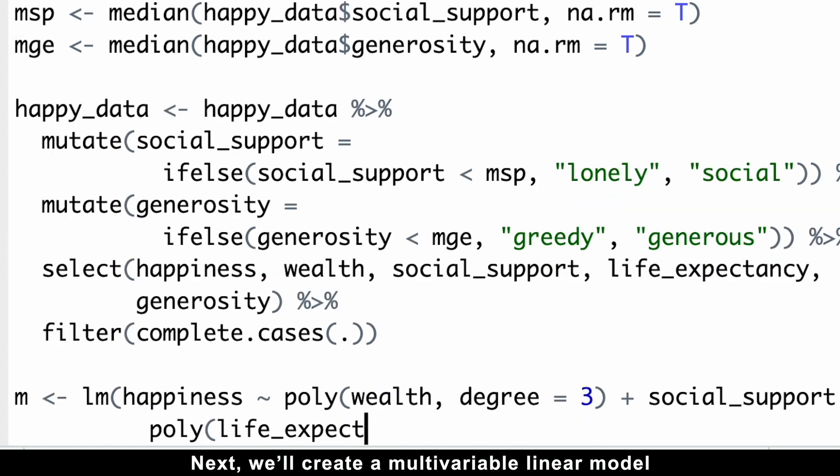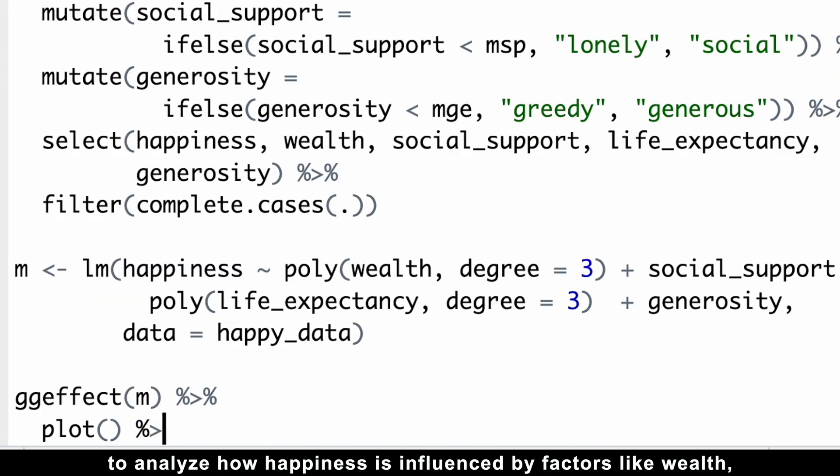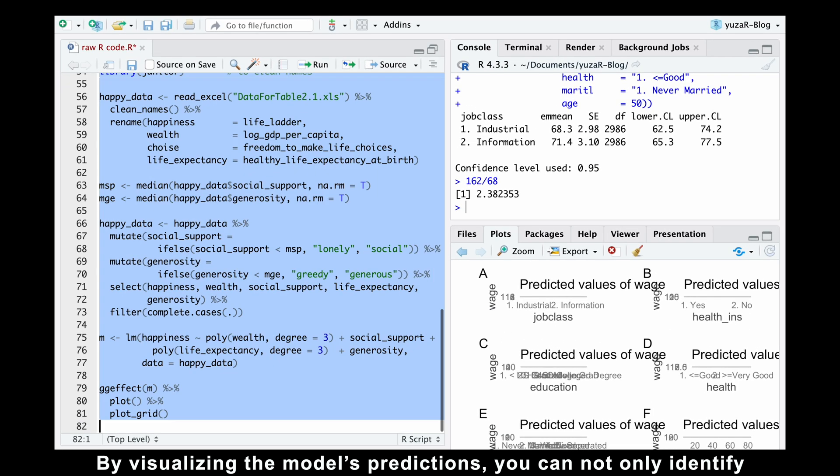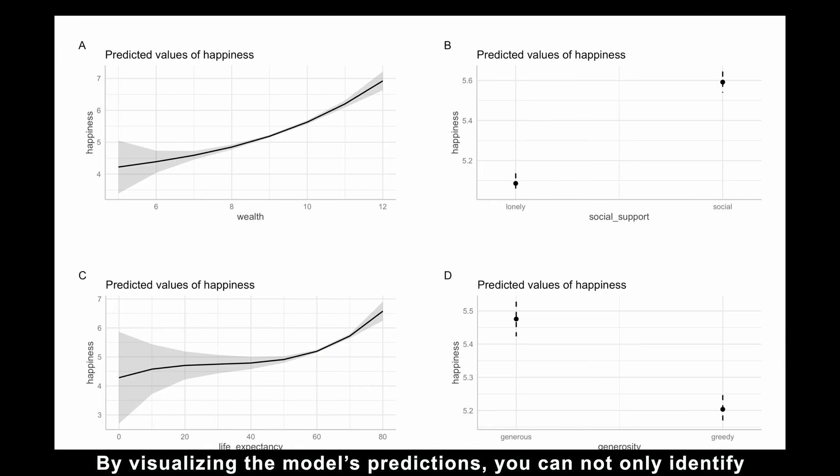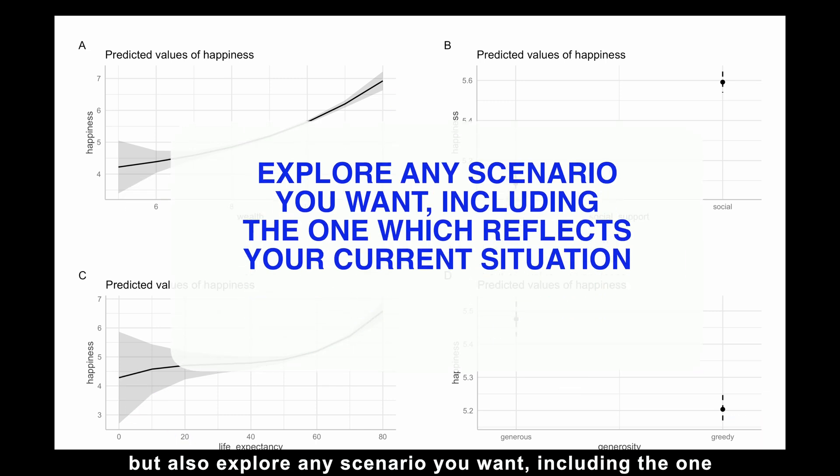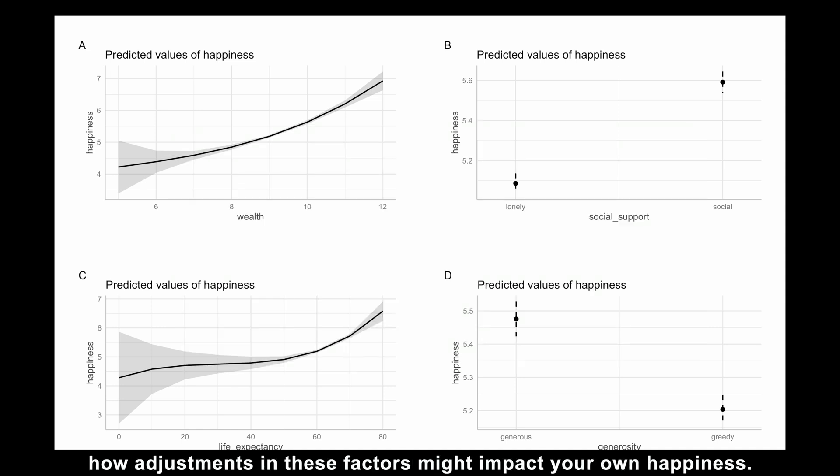Next, we'll create a multivariable linear model to analyze how happiness is influenced by factors like wealth, social support, life expectancy, and generosity. By visualizing the model's predictions, you can not only identify extreme scenarios, the happiest and least happy situations, but also explore any scenario you want, including the one which reflects your current situation, allowing you to see how adjustments in these factors might impact your own happiness.